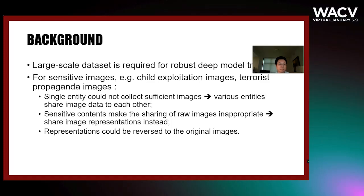For example, to make the online community safe, we expect to train models for illegal image detection, such as child exploitation images, also known as child pornography, and terrorist propaganda images. These task-specific images contain overly sensitive visual contents that should not be spread. In this case, one single entity may not properly collect enough images for robust deep model learning. To deal with this, various entities trying to address the same vision task could share their collected images so that the training data of each entity is enlarged, leading to a more robust model.